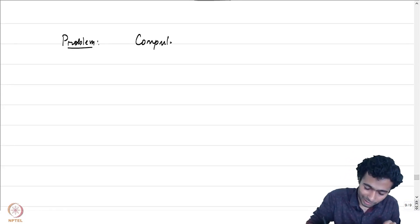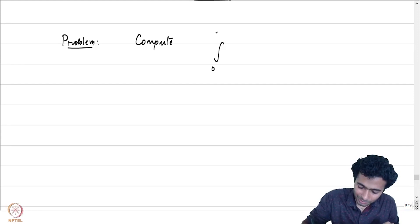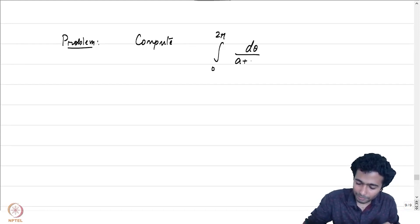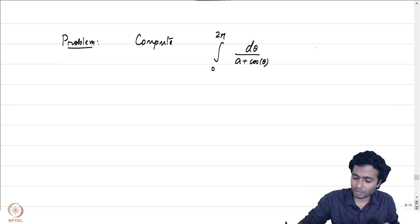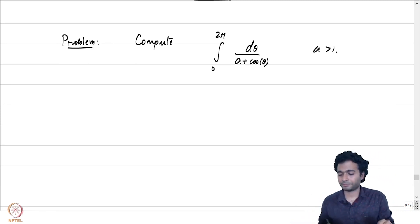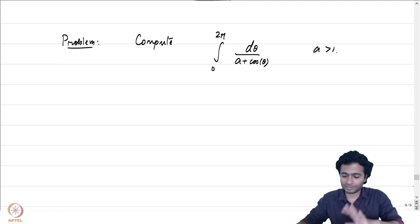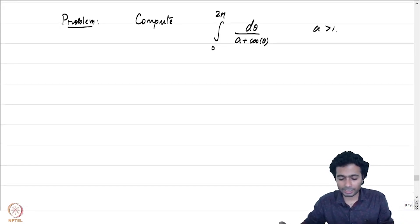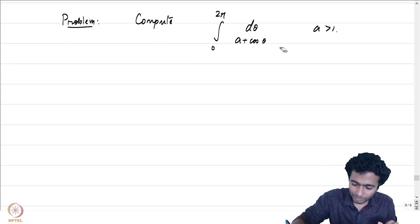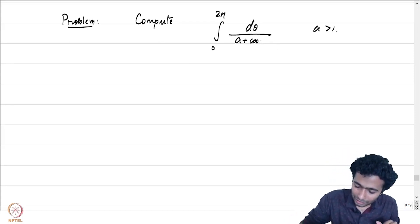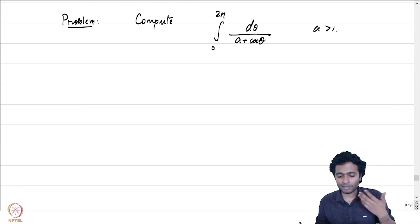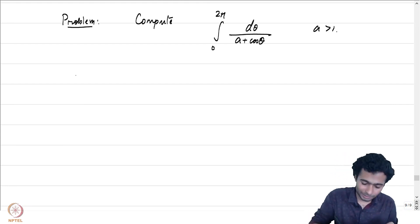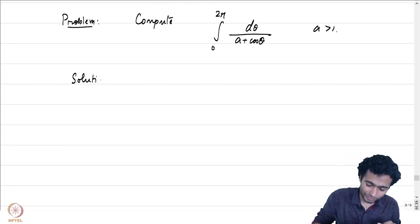The first problem is to compute the integral from 0 to 2π of dθ/(a + cos θ), where a is greater than 1. At first glance, this is a calculus problem, and the reason for solving this problem in this session is not straightforward.